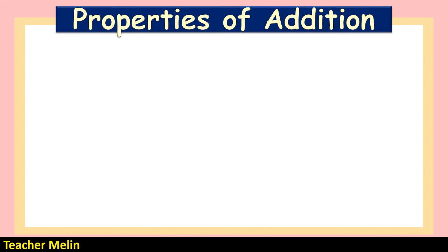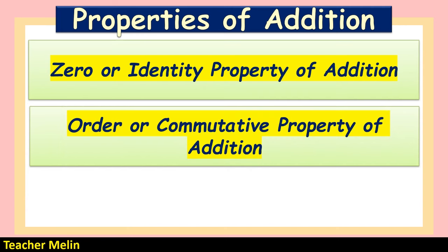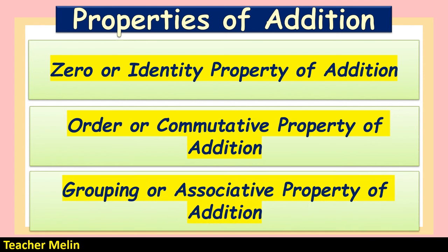There are three properties of addition. The first property is the zero or identity property of addition. The second is the order or commutative property of addition. And the third is the grouping or associative property of addition.